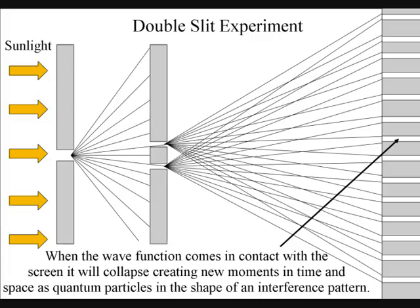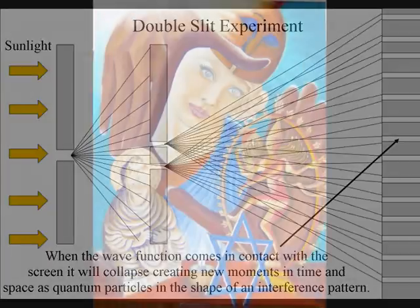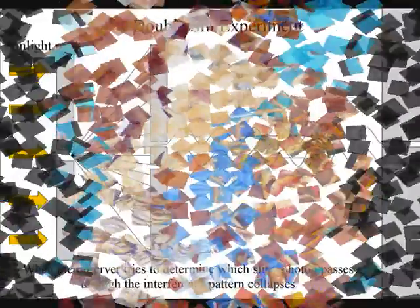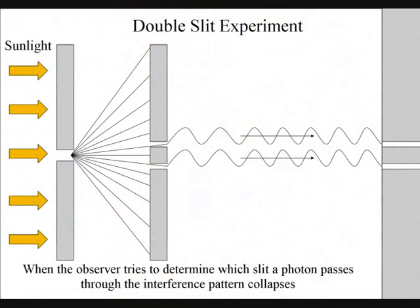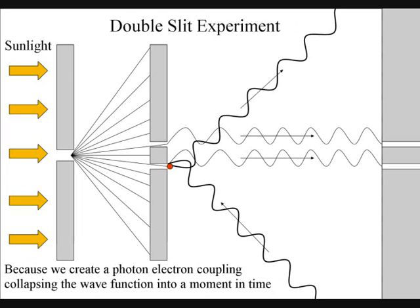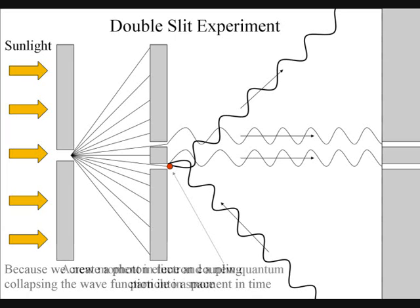When the observer tries to determine which slit a photon passes through, the interference pattern collapses. This is because to observe the photon, we have to create a photon-electron coupling, collapsing the wave function, creating a new moment in time and a new quantum particle in space.